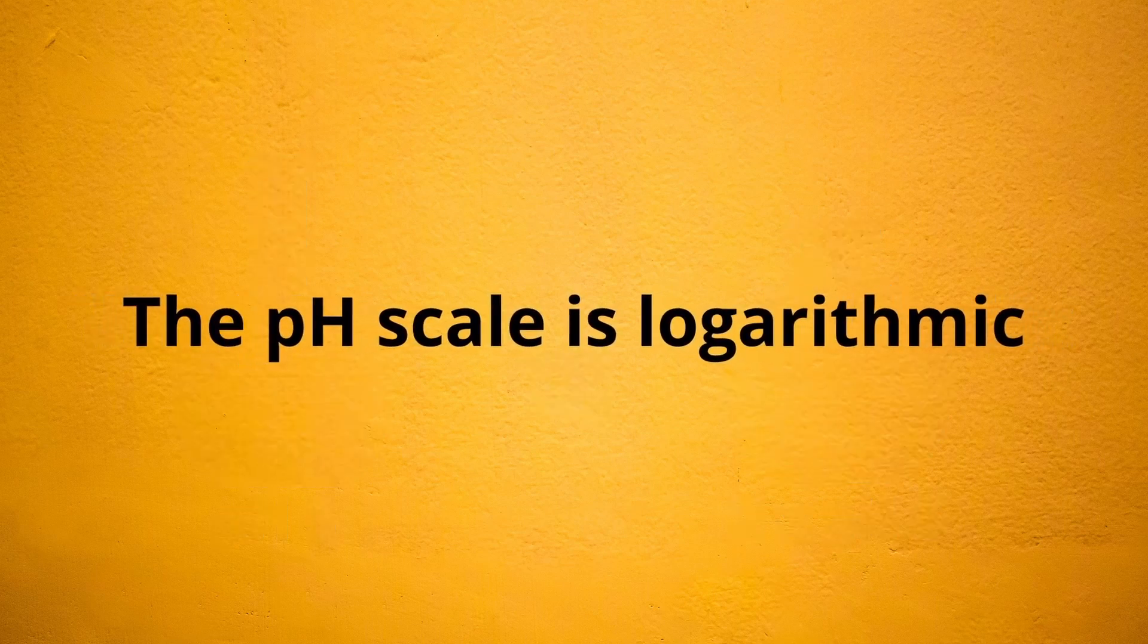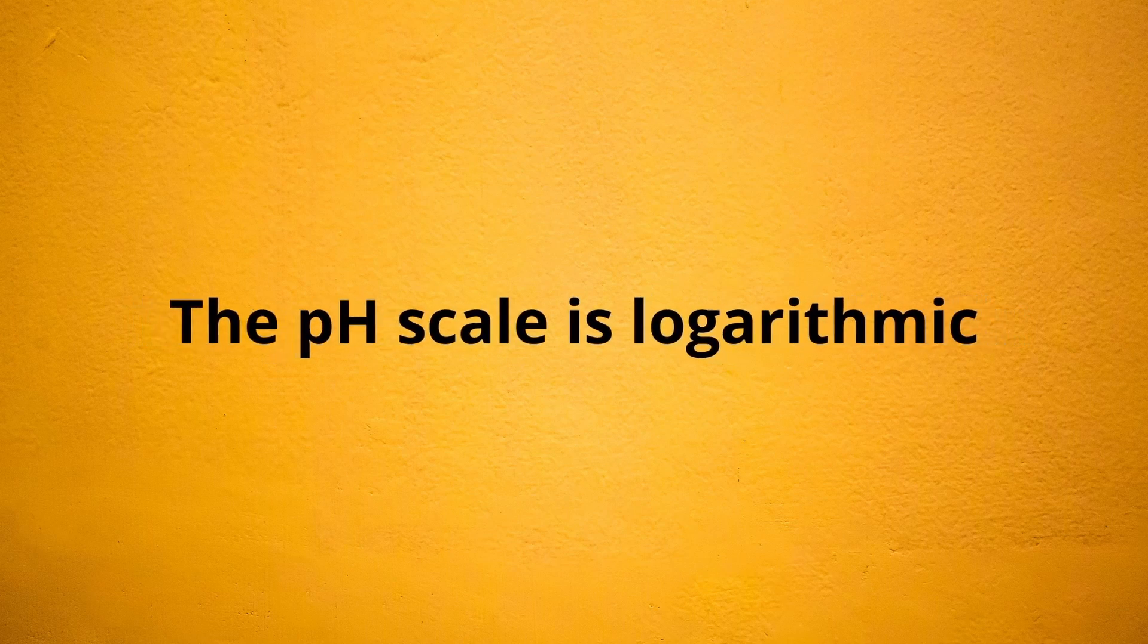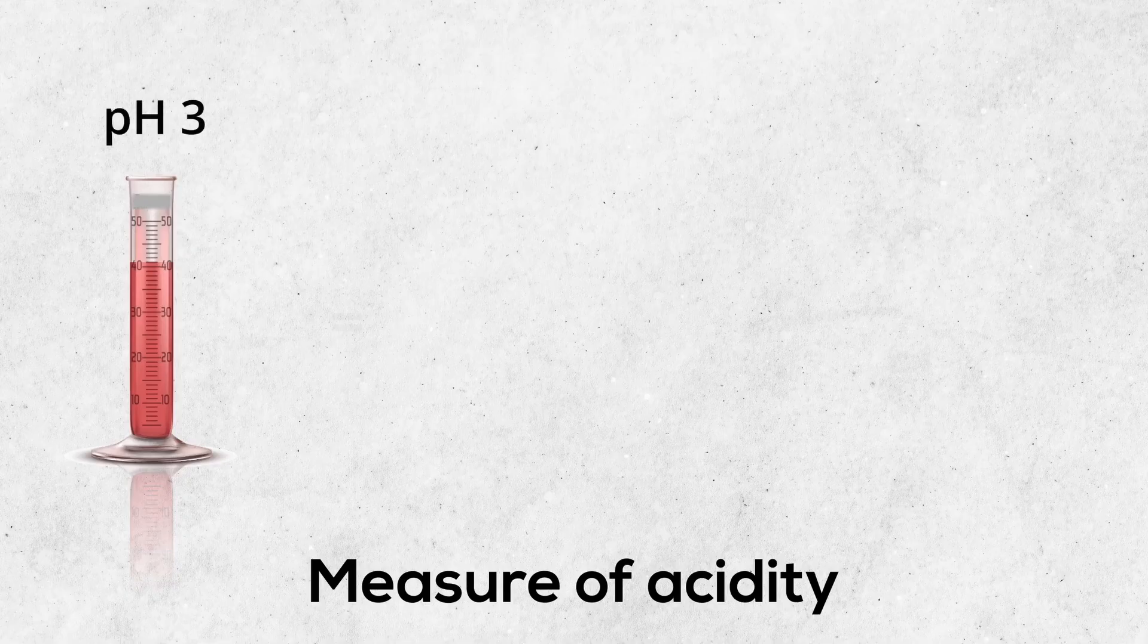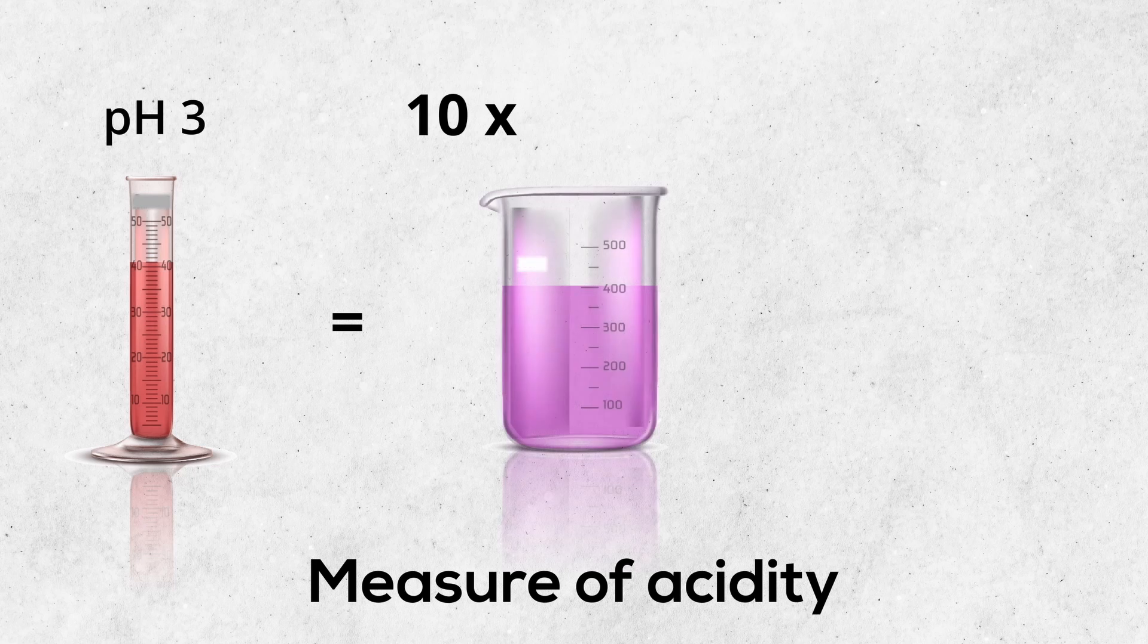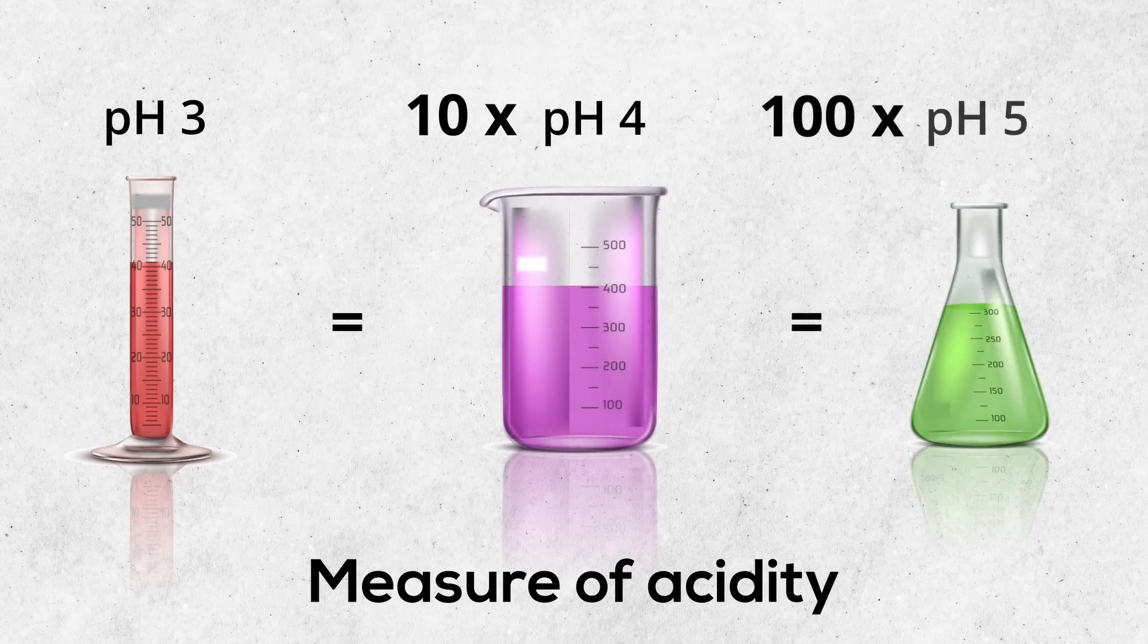Instead, the pH scale is a logarithmic scale. A substance with a pH of 3 is 10 times more acidic than a substance with a pH of 4, and 100 times more acidic than a substance with a pH of 5.